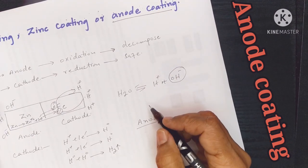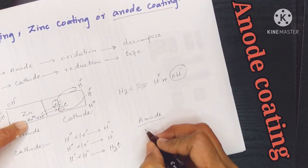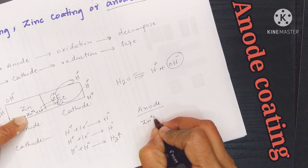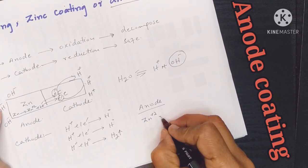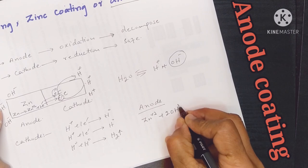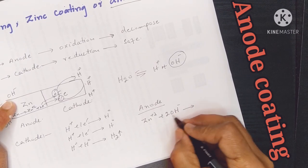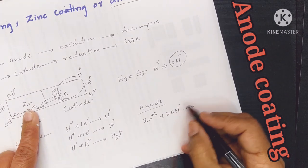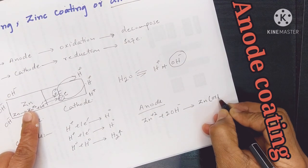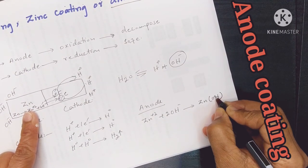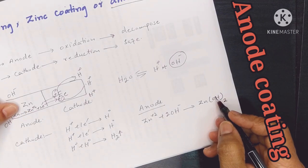At the anode, zinc is oxidized: zinc loses electrons to form zinc ions (Zn²⁺), which then combine with hydroxide ions to form zinc hydroxide.